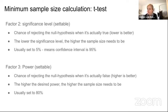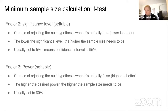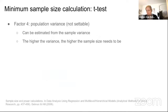Then there is the significance level — the chance of rejecting the null hypothesis when it is actually true (which you want low), usually set to 5%, meaning a 95% confidence interval. There is also the power — the chance of rejecting the null hypothesis when it is actually false (which you want high), set to 80%, which is common. Finally, the population variance, which you cannot control: the higher the variance, the higher the sample size needs to be.